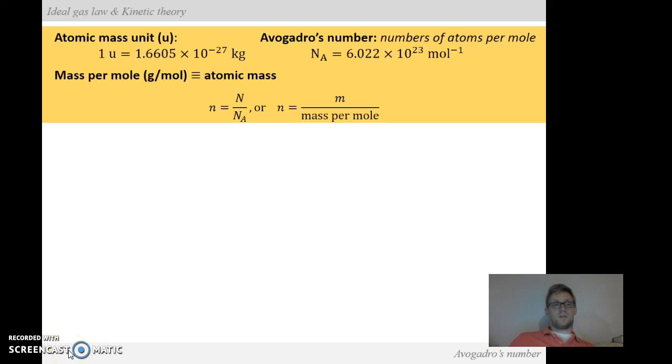Hello, everyone. Today we're going to go over some concepts and examples from ideal gas law and kinetic theory. To start out, we'll talk about atomic mass unit here, which we know can be defined as 1.6605 times 10 negative 27 kilograms. So that's the conversion between that.